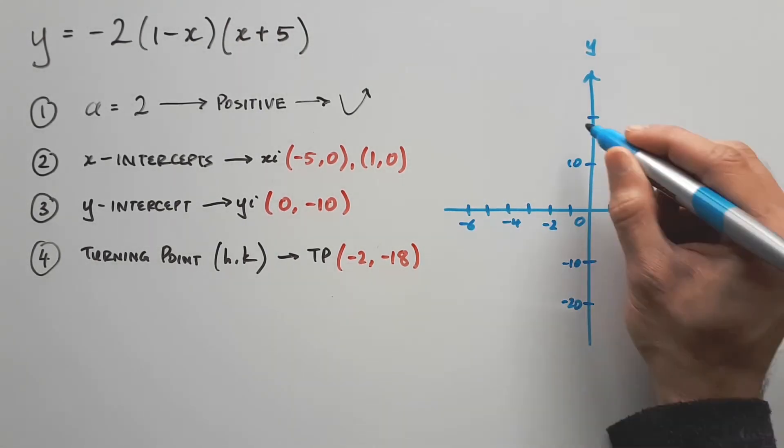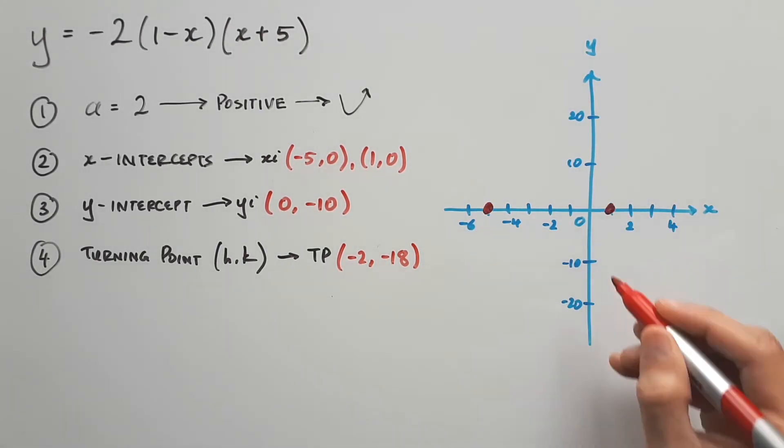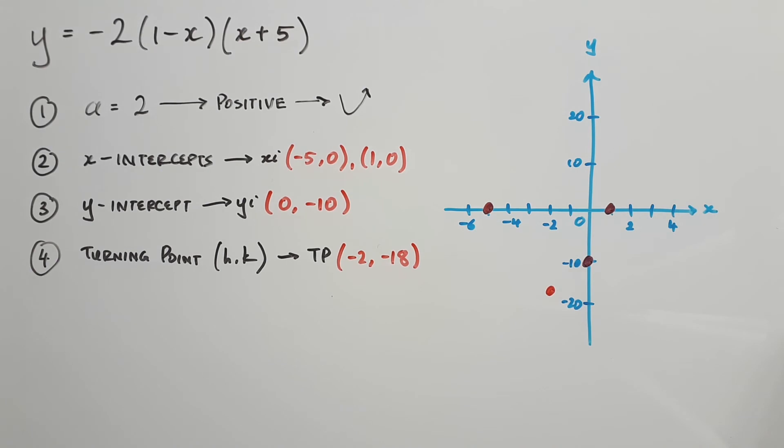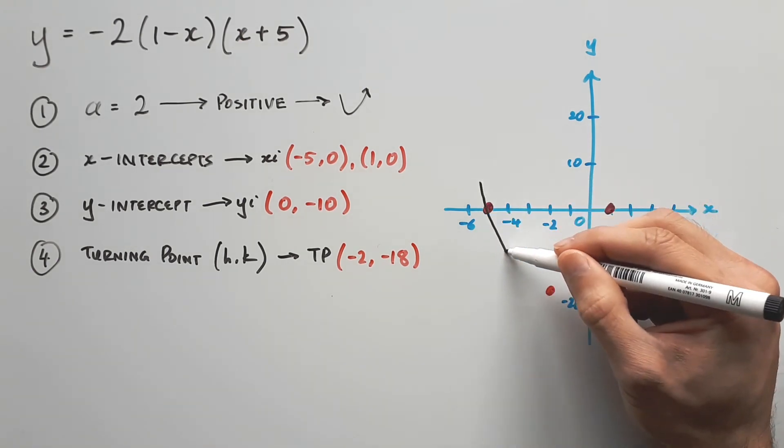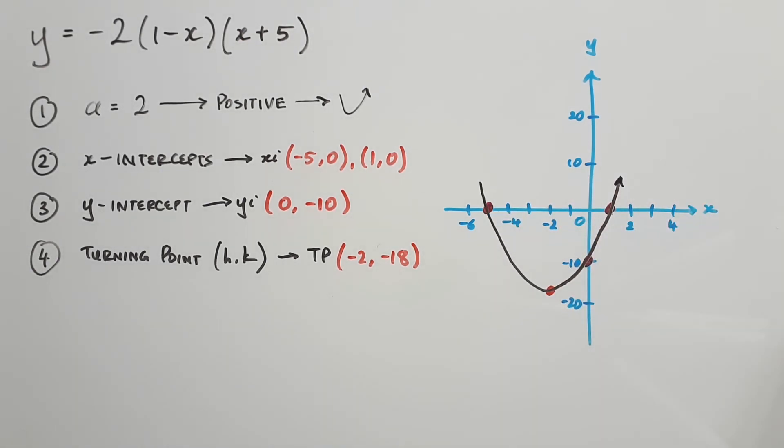The final step is to draw it out. So plot the x-intercepts, the y-intercept, and the turning point. Then draw the curve through, keeping in mind which way it's supposed to finish. As usual, label the graph with any missing points and the equation. And we're done.